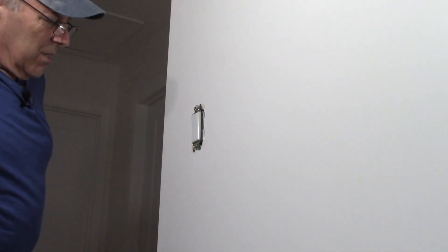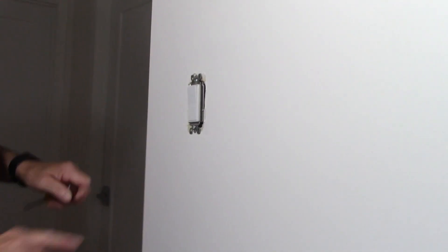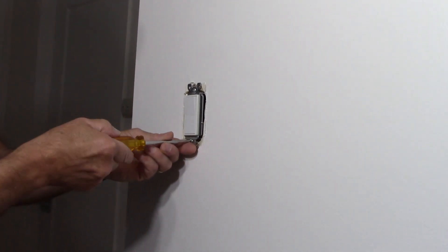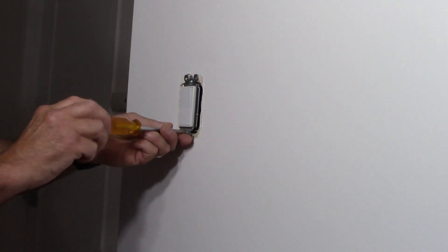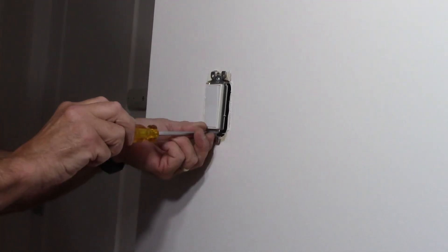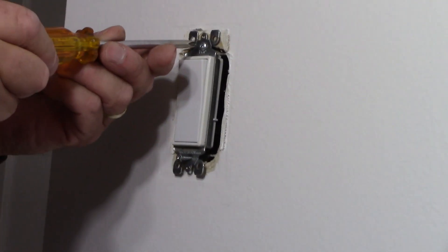Next, we're going to remove this switch right here. And there's only two screws right here that we need to take out so we can pull it out. All right, now you can use either a Phillips or you can use a flathead. I chose to use a Phillips on this one. Take that screw out. I'll take this screw out.